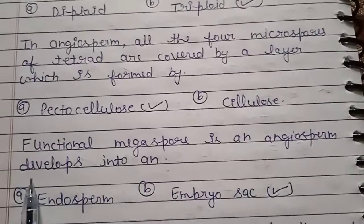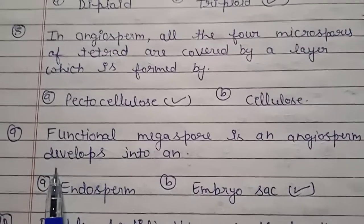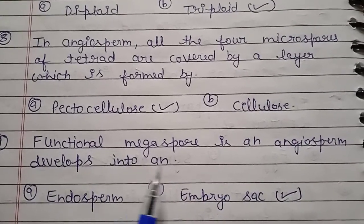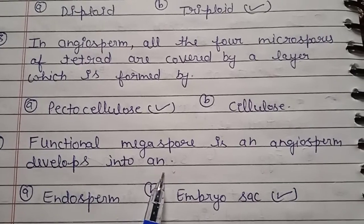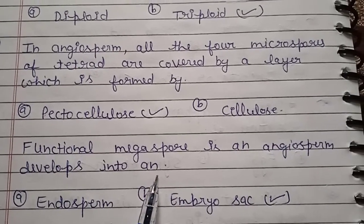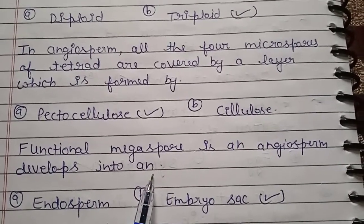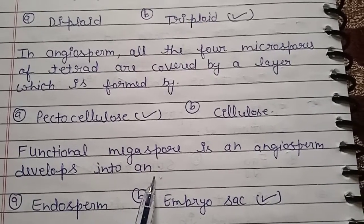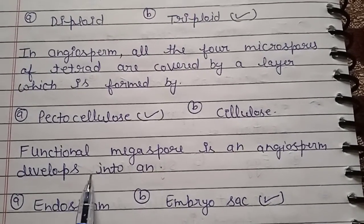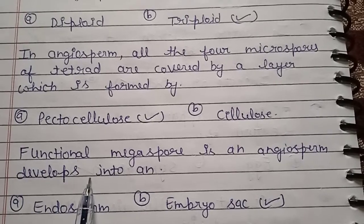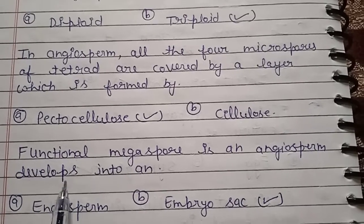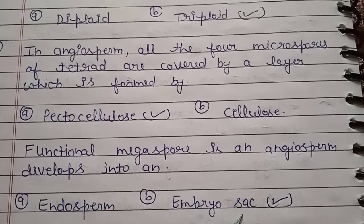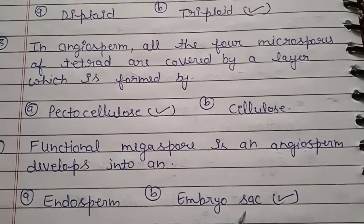Question number 9: the functional megaspore in angiosperm develops into what? Out of 4 megaspores, 3 degenerate but the first one is the functional megaspore. The functional megaspore will develop into the embryo sac, so the right answer is embryo sac.